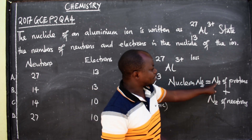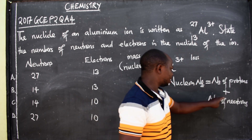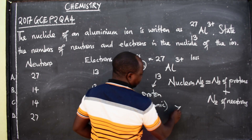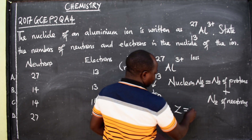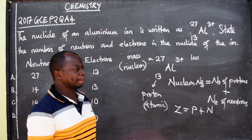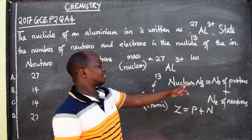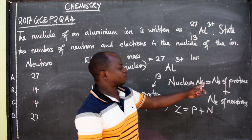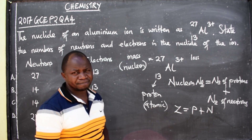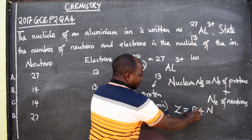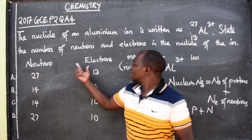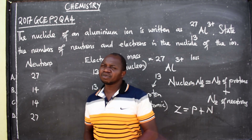In symbols, the nucleon number A equals the number of protons P plus the number of neutrons N. So don't forget this formula. If you want to define mass number, you can say it is the total number of protons and neutrons in an atom of an element. Having said this, we go back to the question — we need to find the number of neutrons and electrons, starting with neutrons.